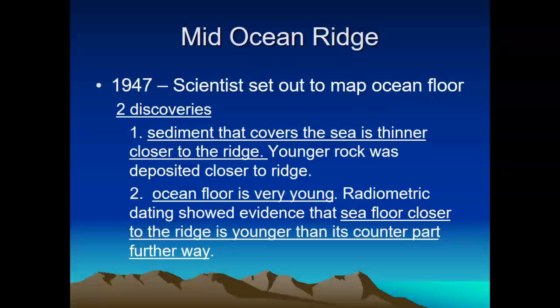The significance is that they found highly important pieces of information. The first is that sediments covering the sea are thinner closer to the ridge — as it got closer to the ocean ridge, the sediment was thinner. That's because there is a crack there that is creating new crust. By the Mid-Oceanic Ridge, new crust is being created from igneous rock. There is a crack in the lithosphere exposing the asthenosphere, allowing magma to come up, solidify, and create new rock.